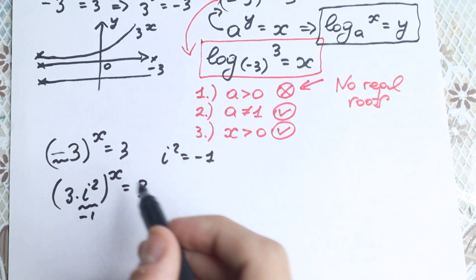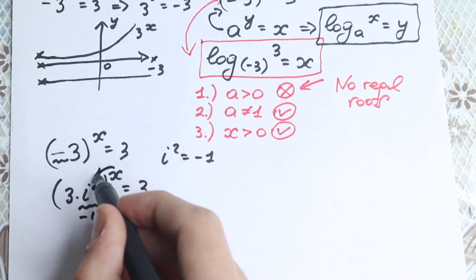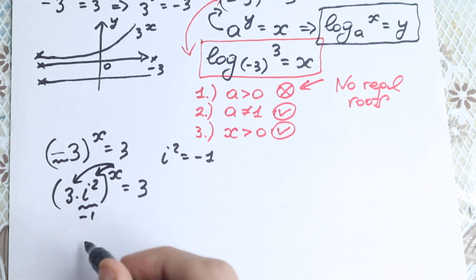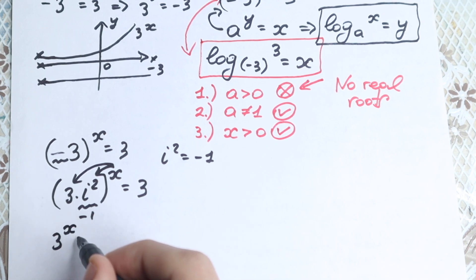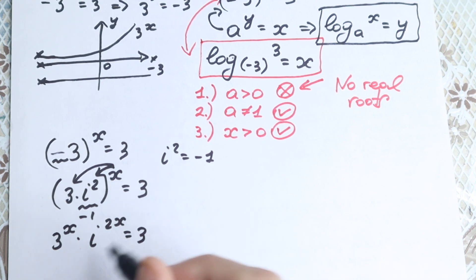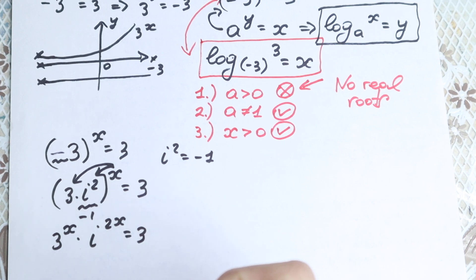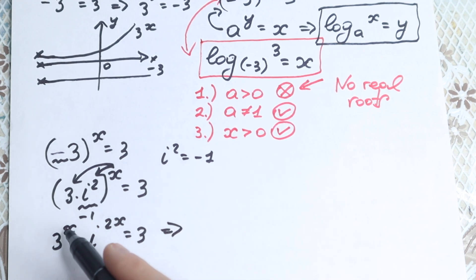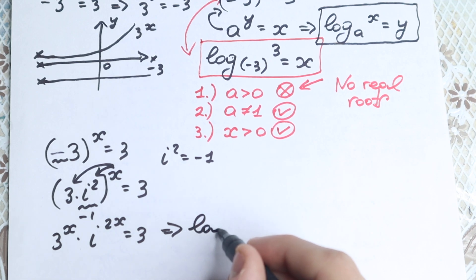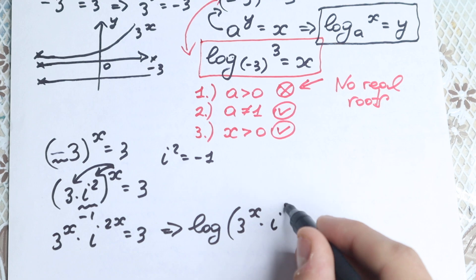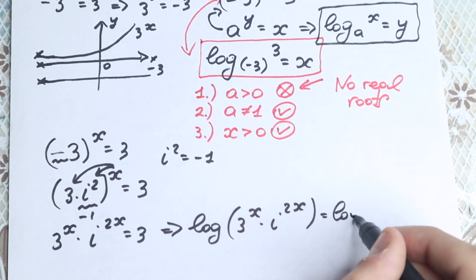Using power rules, we raise both 3 and i squared separately to the power x. So we get 3 to the power x times i to the power 2x equals 3. Now we have this expression with the complex variable i.